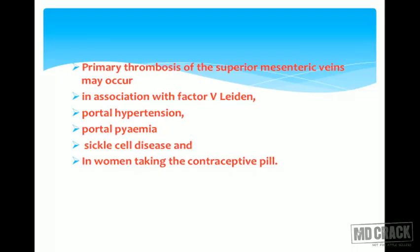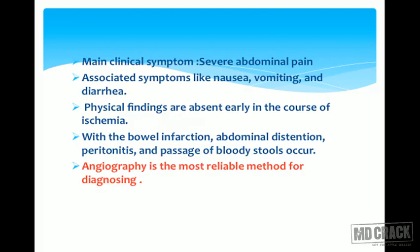Primary thrombosis of the superior mesenteric veins may occur in association with Factor V Leiden, portal hypertension, portal pyemia, sickle cell disease, and in women taking contraceptive pills. Main clinical symptoms include severe pain, nausea, vomiting, and diarrhea. Physical findings are absent early in the course of ischemia.